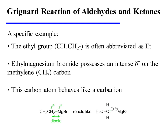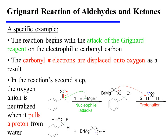The ethyl group is often abbreviated as Et. Ethylmagnesium bromide possesses an intense partial negative charge on the methylene carbon, and therefore this carbon atom behaves much like a carbanion. The reaction begins with the attack of the Grignard reagent on the electrophilic carbonyl carbon. The carbonyl pi electrons are displaced onto oxygen as a result, and in the reaction's second step, the oxygen anion is neutralized when it pulls a proton from water or dilute aqueous acid. The product is a secondary alcohol because the carbon bearing the hydroxyl group is connected directly to two other carbons.